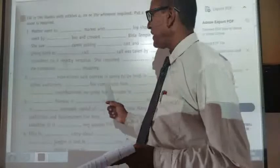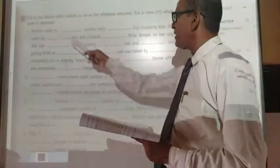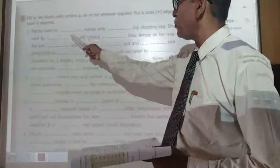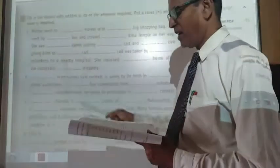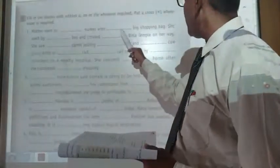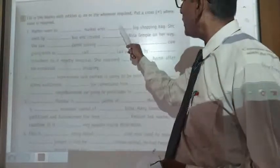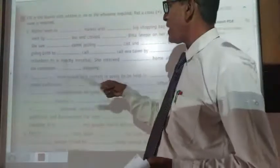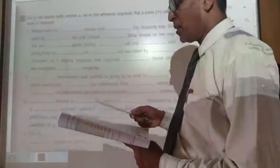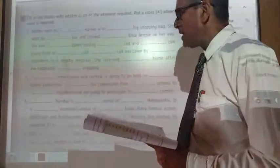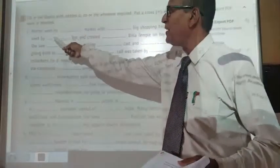Let us see the given sentence. Mother went to dash market. So, mother went to the market. Definite article will be used here. With a big shopping bag. Bag, singular noun is there. So A will be used here. Mother went to the market with a big shopping bag. She went by bus. No need of article here. So we will make a cross mark here.